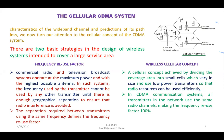In the wireless cellular concept, the whole geographical area is divided into small cells. These cells vary in size and use very low power for transmission, so that the entire area is effectively covered and resources are used efficiently. In CDMA, all transmitters in the network use the same radio channels, making the frequency reuse factor reach 100%. In commercial radio or TV broadcasting, the frequency reuse factor is essentially zero, whereas in CDMA any cell can use the same frequency.